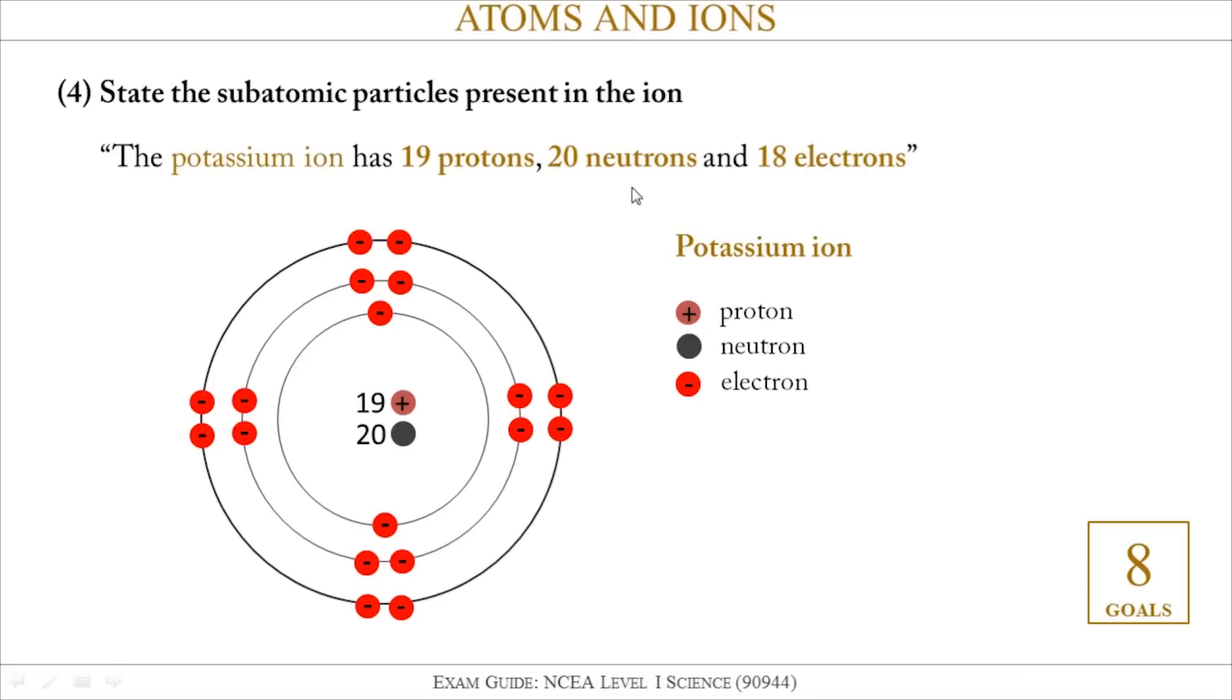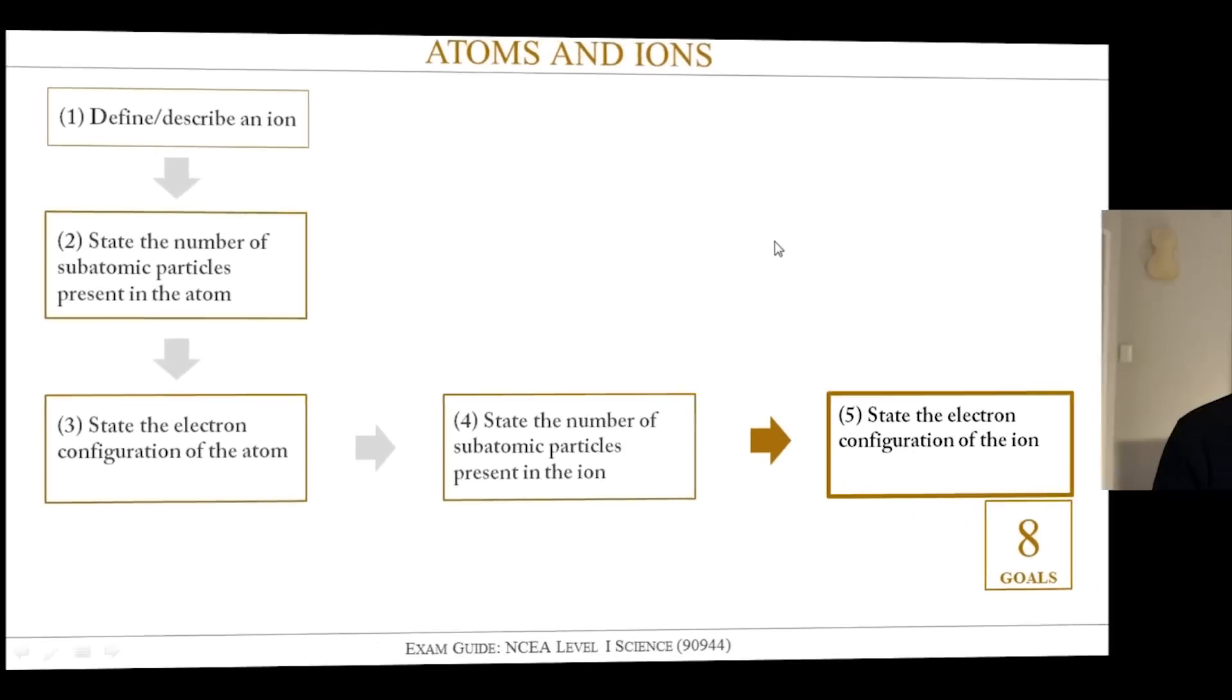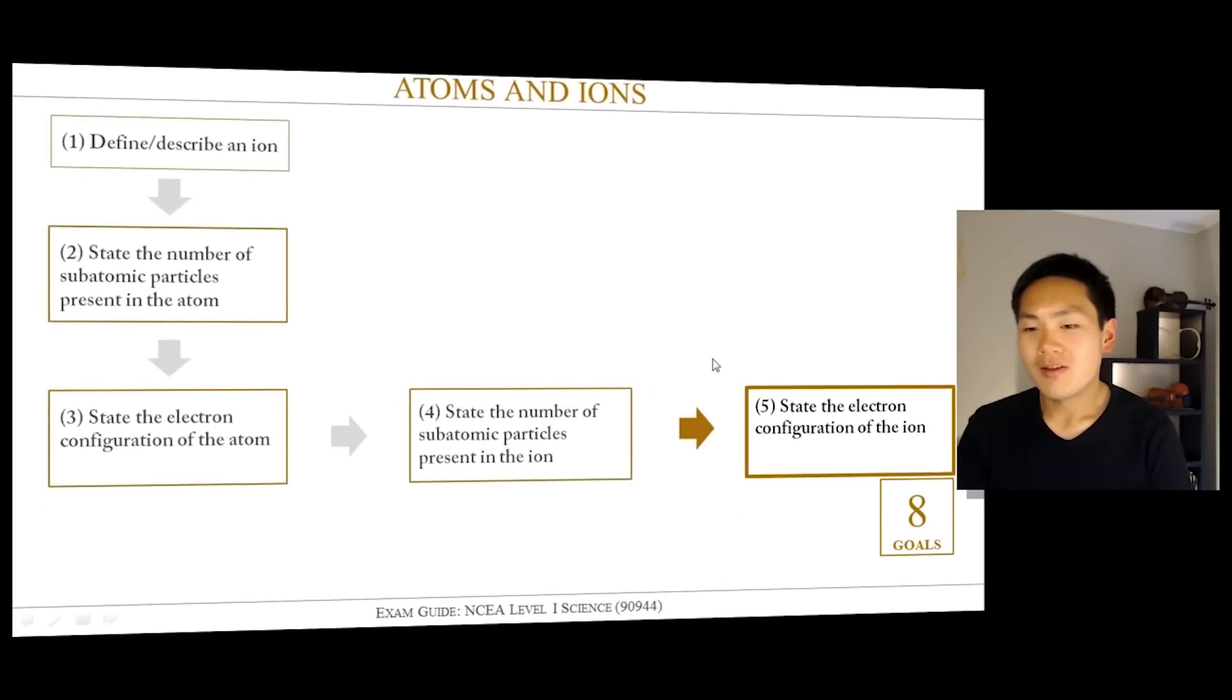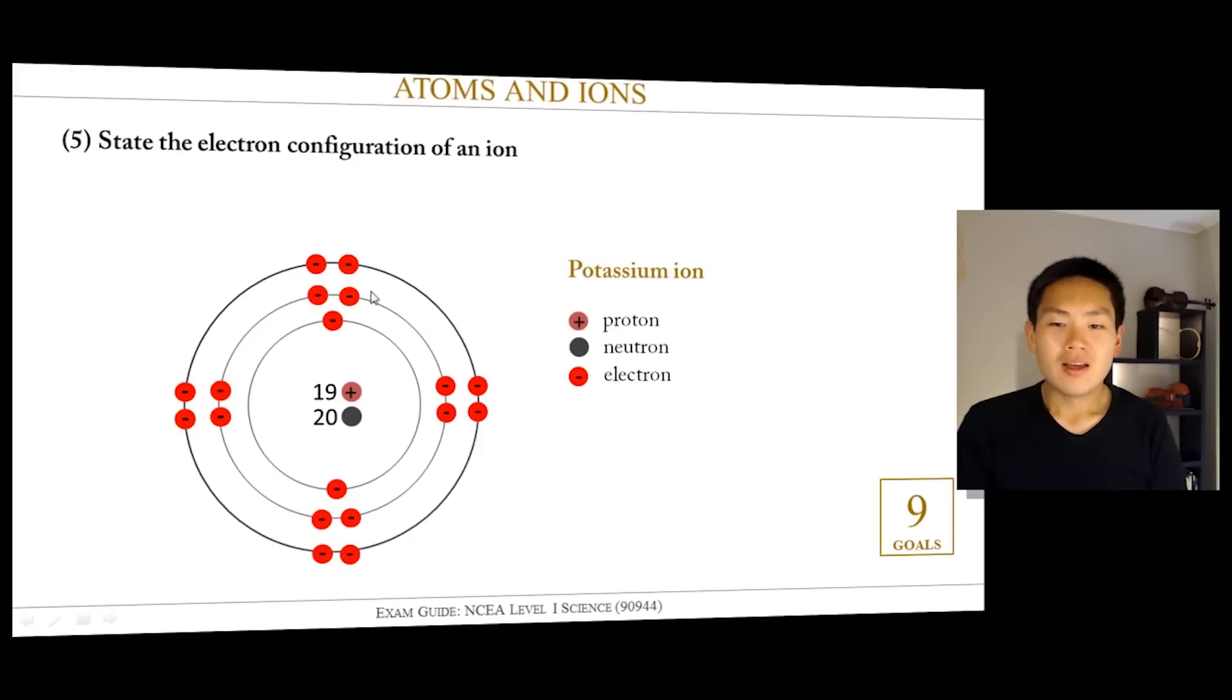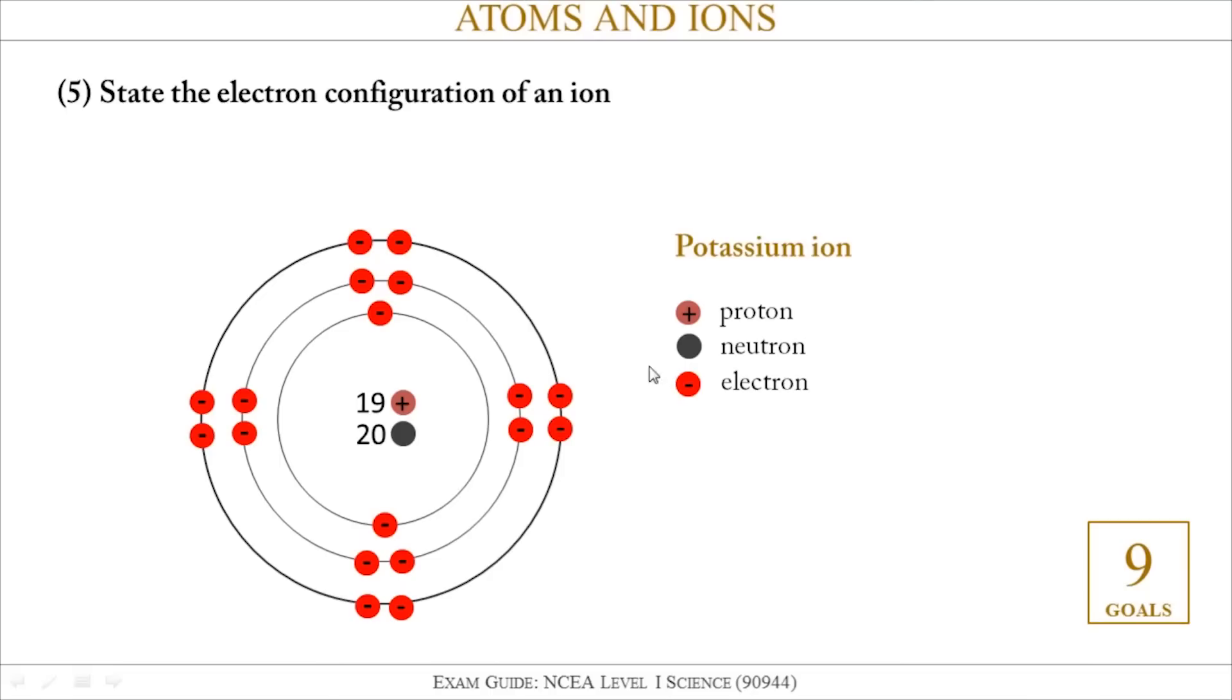In words you would write it as: the potassium ion has 19 protons, 20 neutrons, and 18 electrons. Number five, next thing I'll do is to state the electron configuration of the ion just like how we did it for the atom. Here's our diagram of the ion and the electron configuration - I've got two in the first shell, eight in the second shell, and eight in the third shell. So that should give me 2,8,8. I've got: the potassium ion has an electron configuration of 2,8,8.